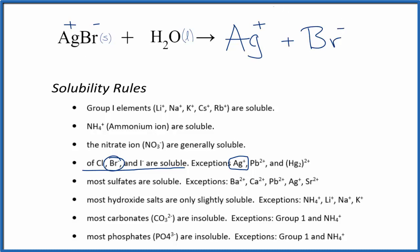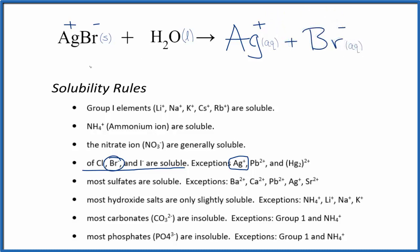We should put aqueous after these ions because they're dissolved in water — that's what aqueous means, dissolved in water. And this would be the equation for AgBr plus H2O.